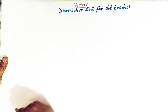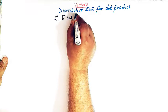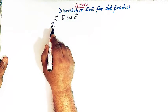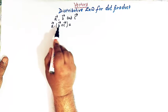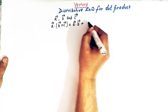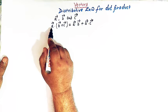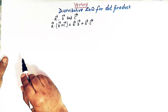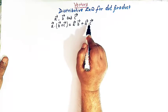Consider three non-zero vectors: vector A, vector B, and vector C. The distributive law for dot product says that if we wish to calculate the dot product of vector A with the sum of vectors B and C, then that dot product equals the sum of the dot product of vector A with B and the dot product of vector A with vector C. So A dot (B plus C) equals A dot B plus A dot C.